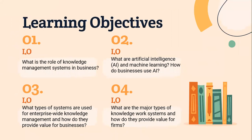In this topic, we will learn four learning objectives. The first is: what is the role of knowledge management systems in business? The second is: what are artificial intelligence, AI, and machine learning, and how do businesses use AI? The third is: what types of systems are used for enterprise-wide knowledge management, and how do they provide value for businesses? And the last is: what are the major types of knowledge work systems, and how do they provide value for firms?